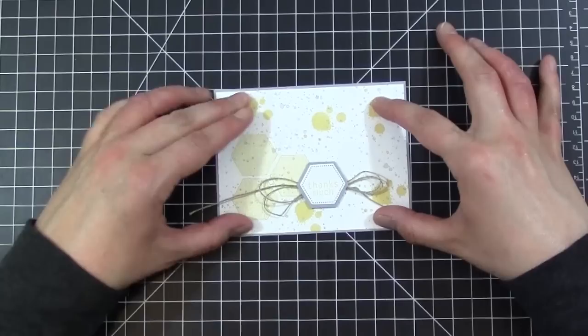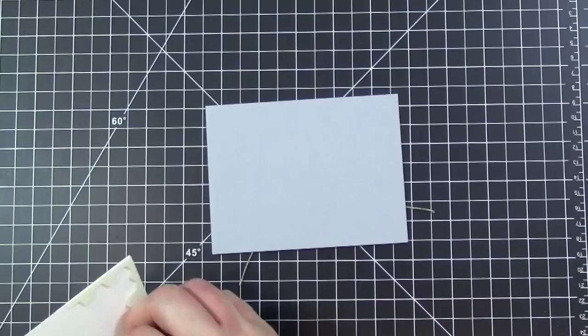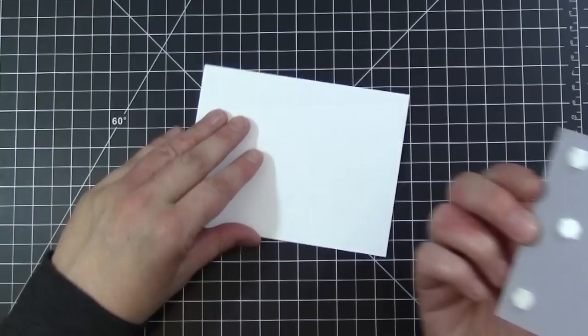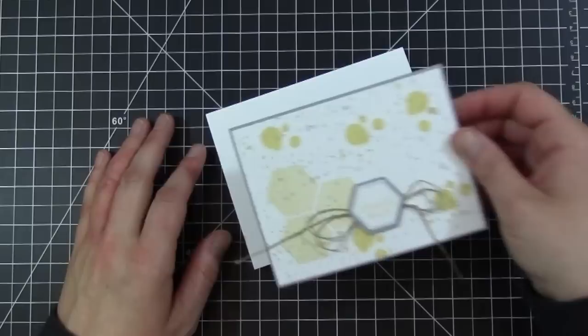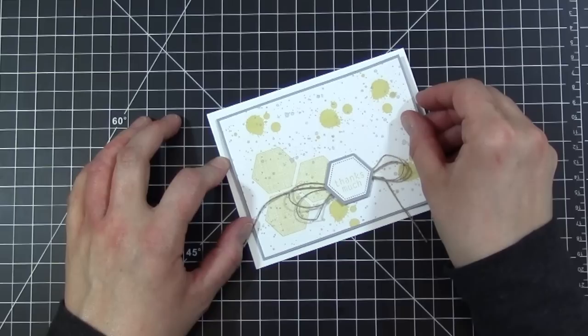This will get some dimensionals and I'll pop that onto the front of a Whisper White cardstock which is an A2 size card. I added my dimensionals to the back of my Smokey Slate. I'm going to go ahead and mount this to the front of my card. This is a standard A2 size card which is four and a quarter by five and a half.